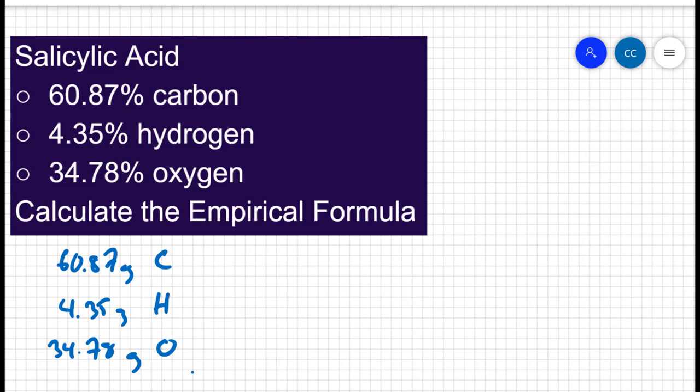Now as we did in the last problem, the grams aren't particularly helpful. We have to convert those to moles. 60.87 grams of carbon turns into 5.07 moles of carbon. 4.35 grams of hydrogen turns into 4.32 moles of hydrogen.